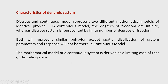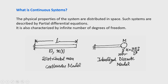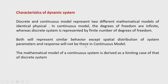Discrete and continuous models represent two different mathematical models for the same physical system — both represent the same cantilever beam. In the continuous model, the degrees of freedom are infinite, whereas in a discrete system it is represented by a finite number of degrees of freedom. Both represent similar behavior except that the spatial distribution of parameters is absent in the discrete model, whereas in the continuous model the response and exciting forces are distributed in the spatial domain.